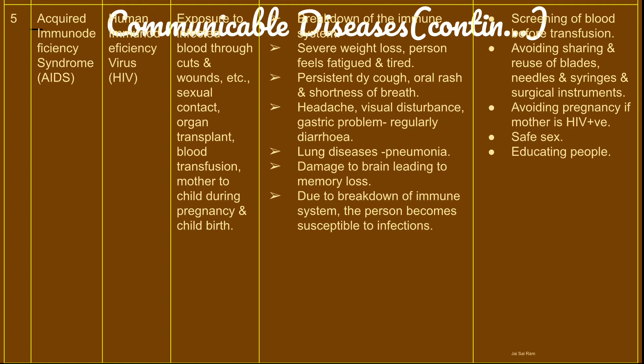Preventive measures for AIDS include screening of blood during blood transfusion, avoiding sharing and reuse of blades, needles, syringes, and surgical instruments, avoiding pregnancy if the mother is HIV positive, practicing safe sex, and educating people to stop the spread of HIV.